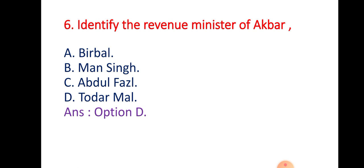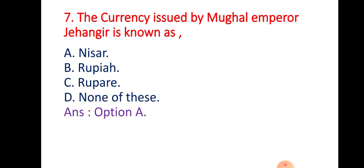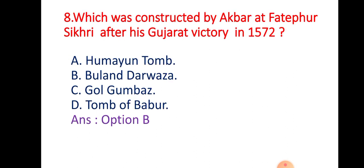Question 7: The currency issued by Mughal Emperor Jahangir is known as — Option A: Nizar; Option B: Rupaya; Option C: Rupare; Option D: None of these. The right answer is Option A — Nizar is the name of the currency issued by Mughal Emperor Jahangir.